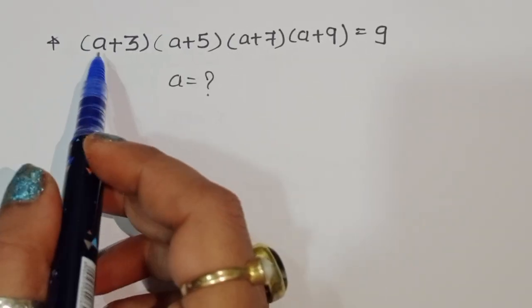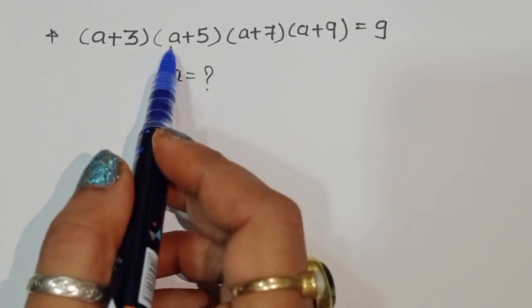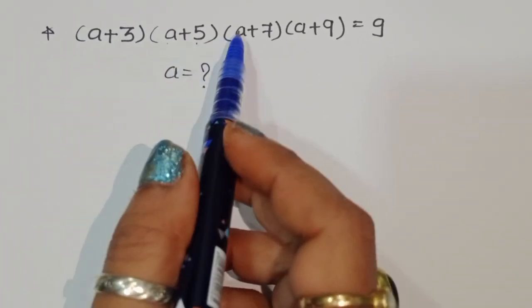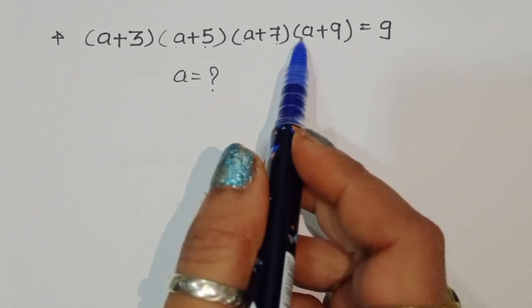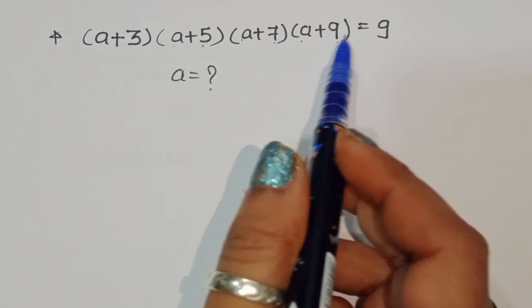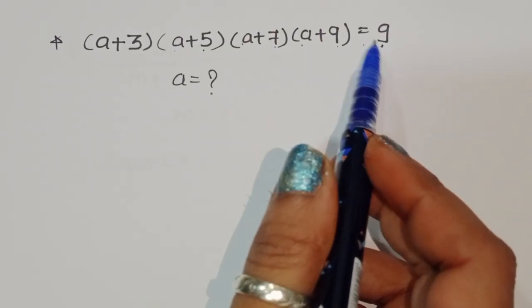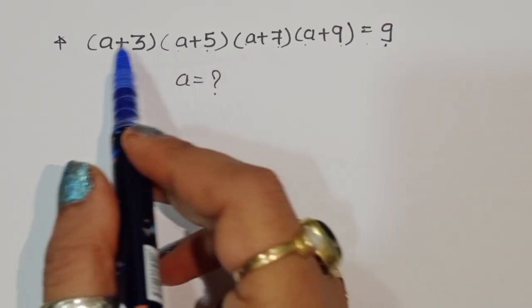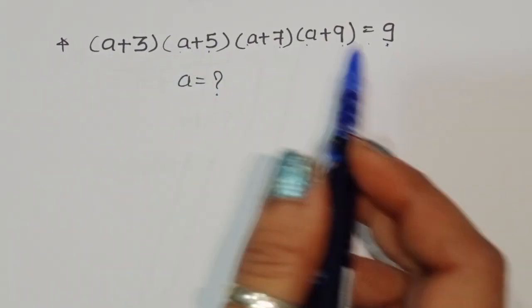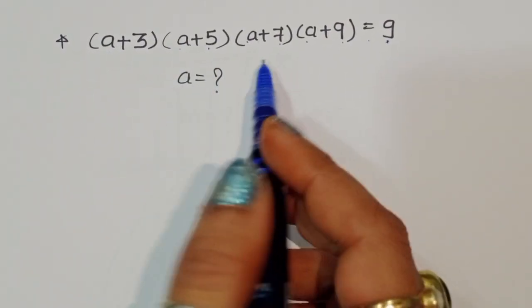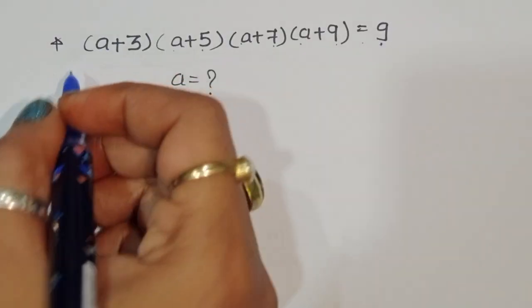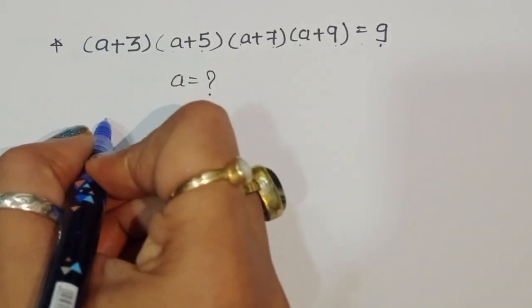The question is given: (A+3)(A+5)(A+7)(A+9) is equal to 9. Here we have to find out the value of A. Let's see the solution.